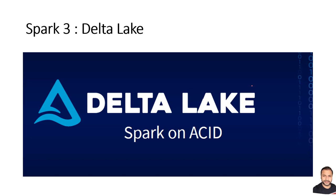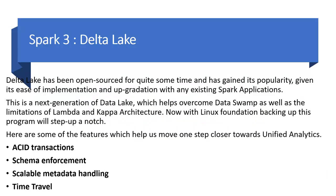Delta Lake is coming from a proprietary company — originally Delta dot IO — and this concept has now been open-sourced. It targets the problem of data swamps and the lack of ACID properties found in both lambda and kappa architectures, where it's difficult to avoid creating silos of data. The whole idea of bringing the Delta Lake concept into the Spark world is to move toward a unified analytics platform — that is what Spark 3 aims to present.